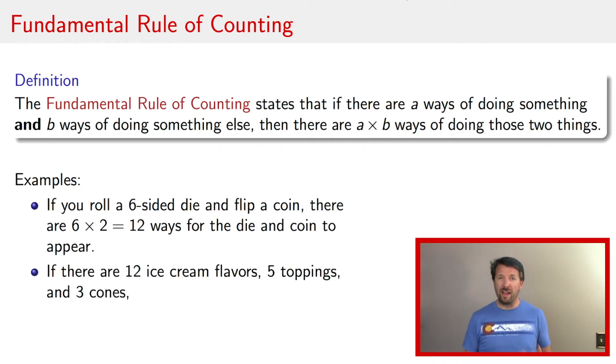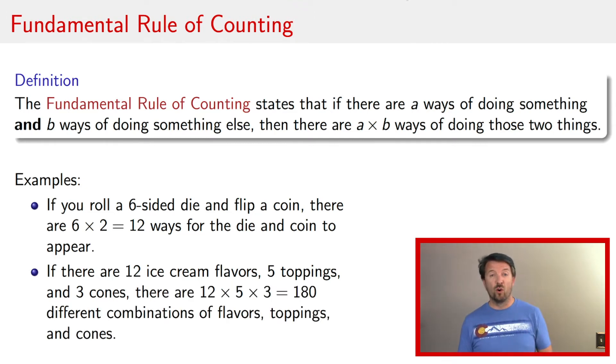A tastier example, imagine yourself walking to an ice cream shop, and you find in this ice cream shop there are twelve different flavors, there are five different toppings, and three different ice cream cones. And you're asking yourself, well, how many different combinations are there of ice cream cones and toppings? Well, there are twelve times five times three or 180 different ways to have your ice cream from that ice cream shop.